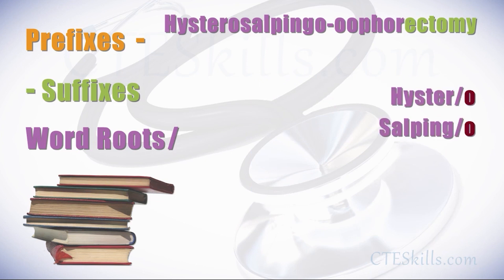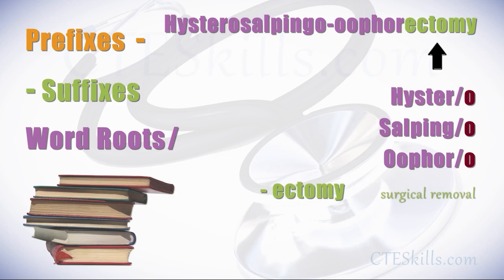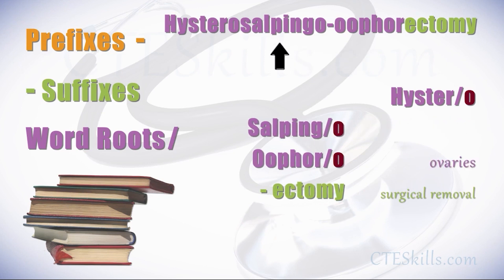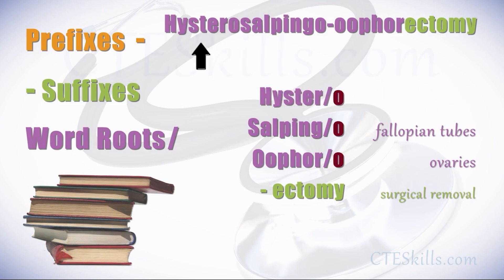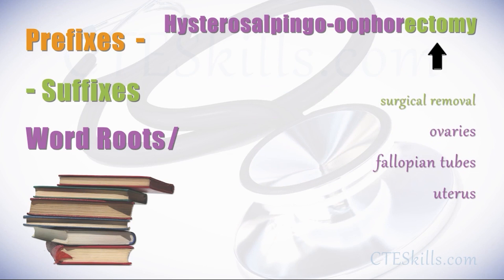What does hysterosalpingooophorectomy mean? Let's follow the formula. First, break down the term into elements — prefixes, suffixes, and word roots — beginning from the right and moving to the left. 'Ectomy' means surgical removal. 'Oophoro' is a root word for ovaries. 'Salpingo' is a root word for fallopian tubes. 'Hystero' is a root word for uterus. Reading from right to left: surgical removal of ovaries, fallopian tubes, and uterus.